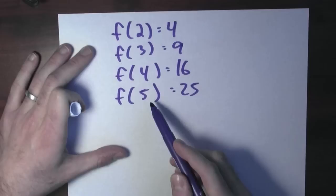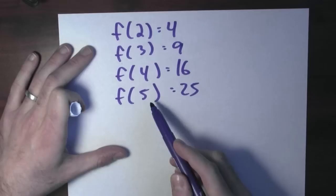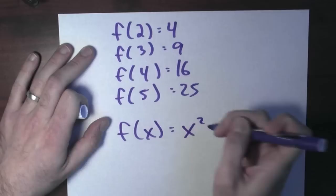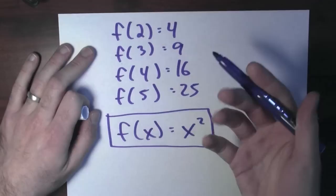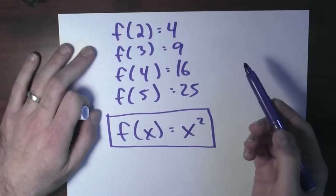Instead of listing off every single assignment that f makes, one way to talk about these assignments is to use a rule, like f of x equals x squared. This single rule explains how all of these assignments are made. The rule says that f assigns to the number x the number x squared. So in particular, f assigns to the number five — five squared — 25. Or f assigns to the number four — four squared — which is 16. Or f assigns to the number three — three squared — which is nine.